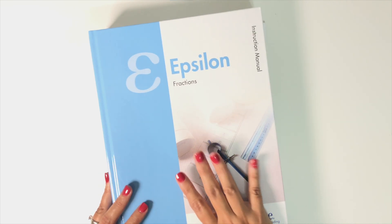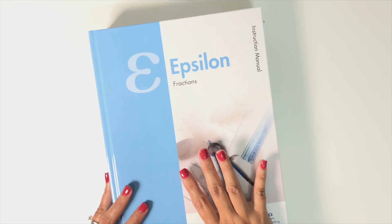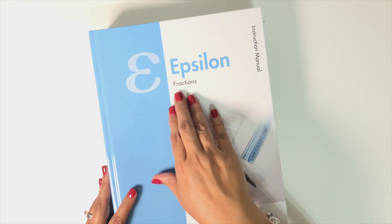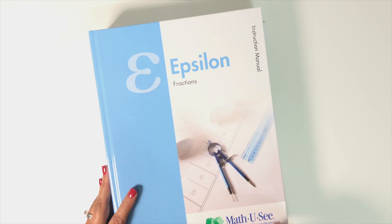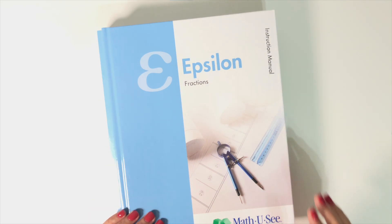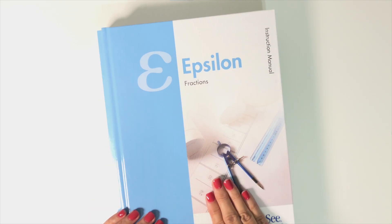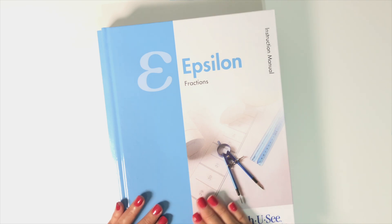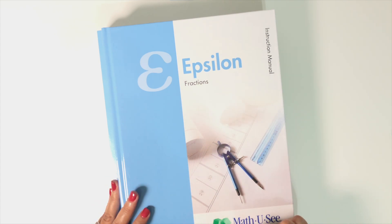So for example, this is Epsilon. I'm using this with my oldest next year. He'll be in fifth grade. So this level covers fractions. Since this is a mastery based curriculum, they're not named for grade level. They're given these Greek letters as names. So Epsilon, I'm using it with my fifth grader.